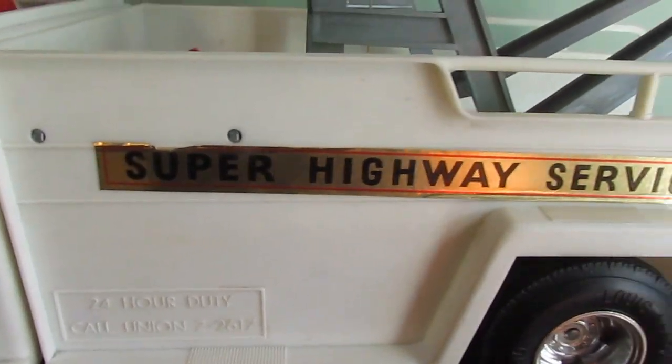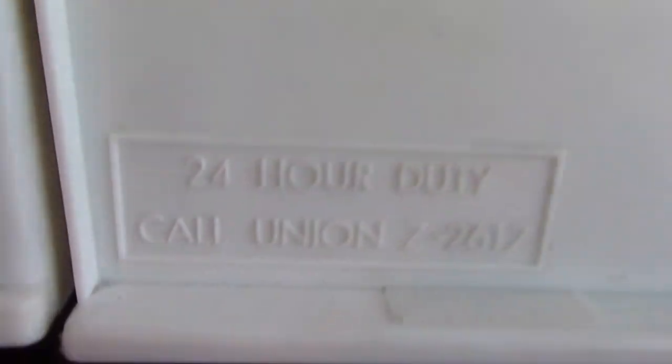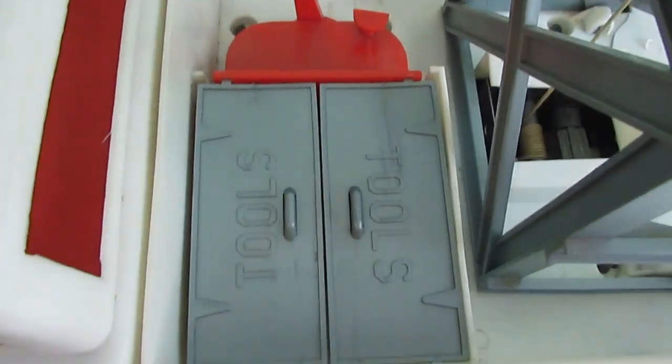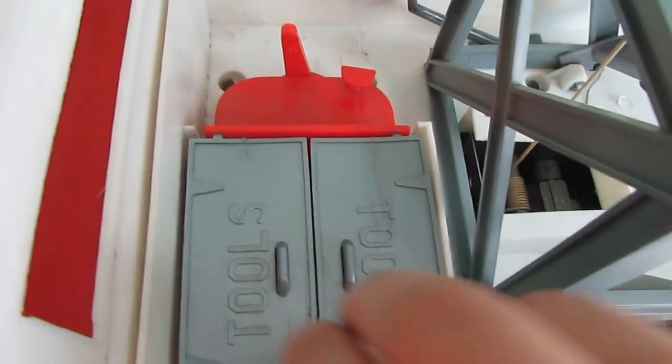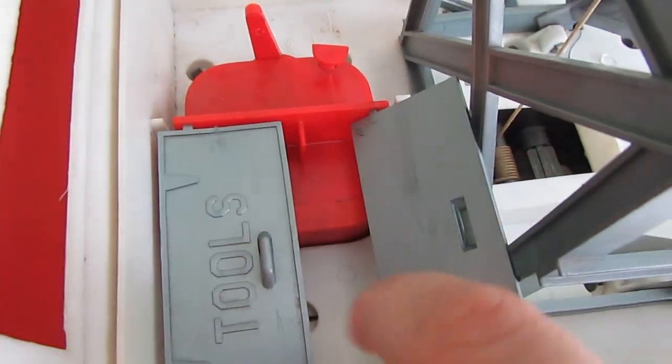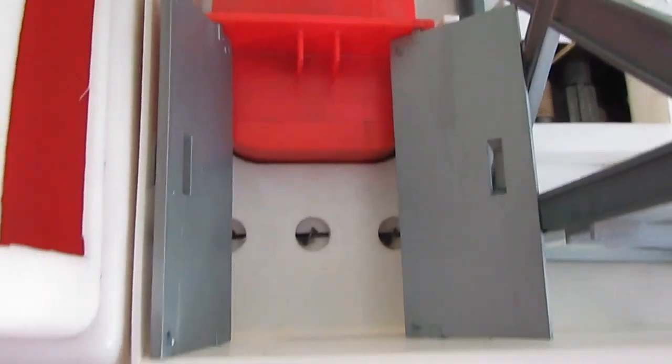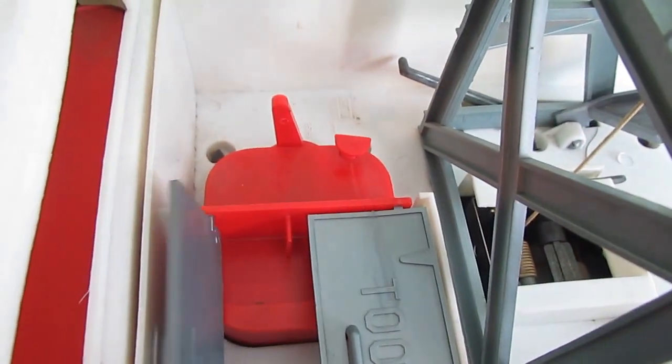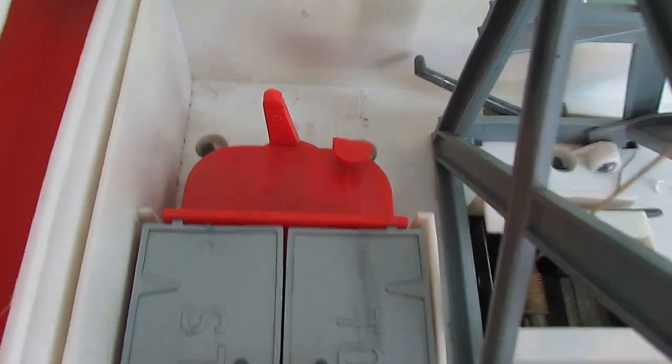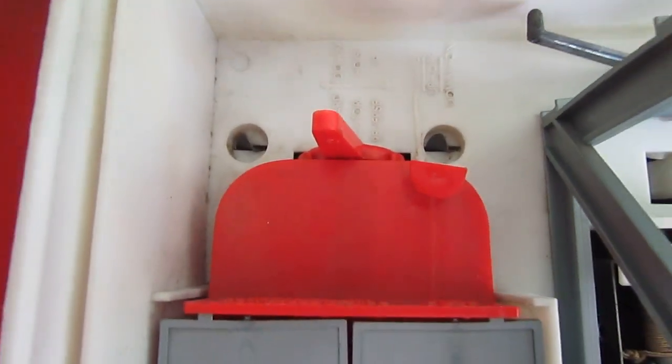On the side panel here it says Super Highway Service Incorporated. Got the original sticker still on there, the side view mirrors which are usually gone because this toy was really used for outside play even though it was battery operated, and it usually took a lot of beatings. This is the toolbox, nice and clean. The tools are not inside, I have them over here. These are the controls.